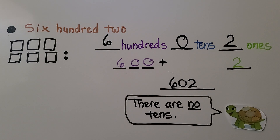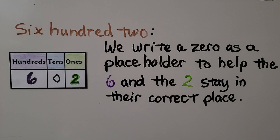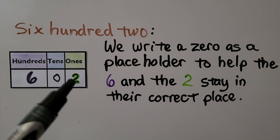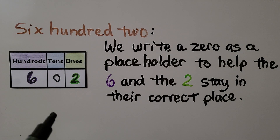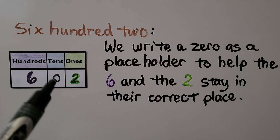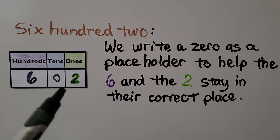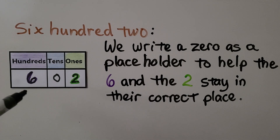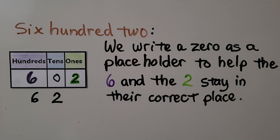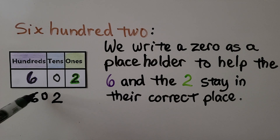602. We have 602 in word form, and we can see there's a six in the hundreds place, zero tens, and two ones. We write a zero as a placeholder to help the six and the two stay in their correct places. If that zero wasn't there, it might look like a 62. The zero between them helps us know that the six is hundreds and the two is ones.